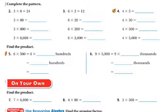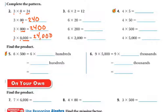Now we're going to complete the pattern. Basic fact: 3 times 8 is 24. Adding a 0: 3 times 80 is 240. Adding two 0s: 3 times 800 is 2,400. Adding three 0s: 3 times 8,000 is 24,000. Next pattern: 6 times 2 is 12. 6 times 20 — add 1 zero — is 120. 6 times 200 — two 0s — is 1,200. 6 times 2,000 — three 0s — is 12,000.